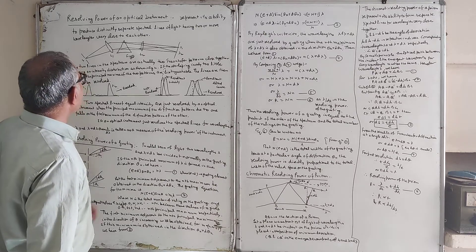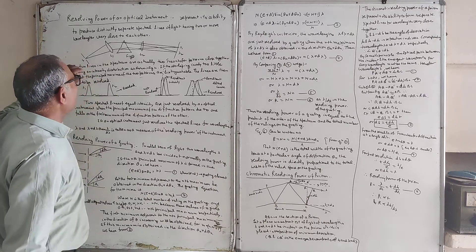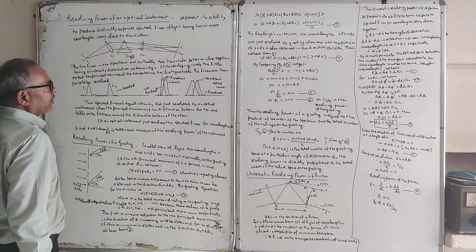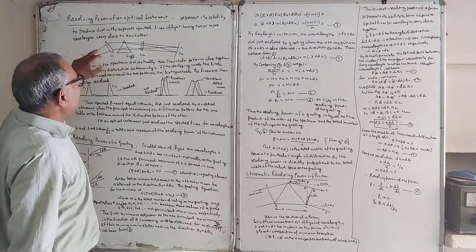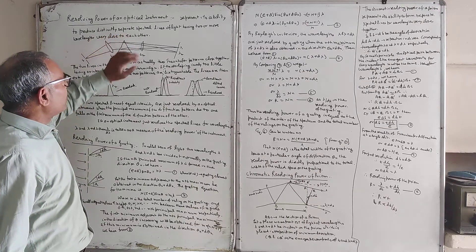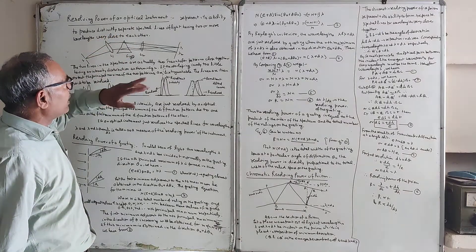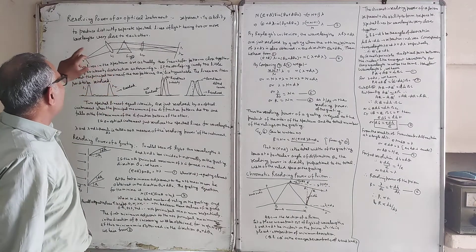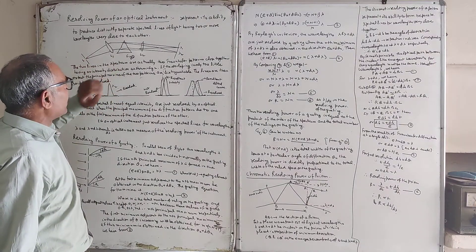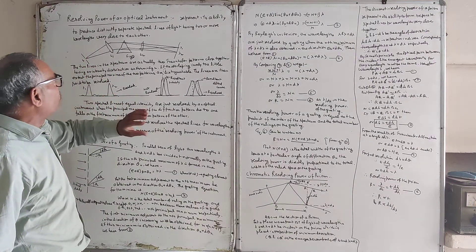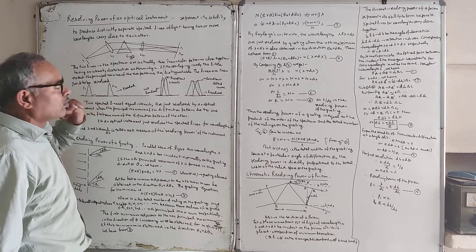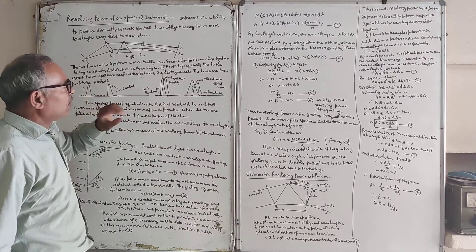Today we are going to discuss the resolving power of an optical instrument. The resolving power of an optical instrument represents its ability to produce distinctly separate spectral lines of light having two or more wavelengths very close to each other.